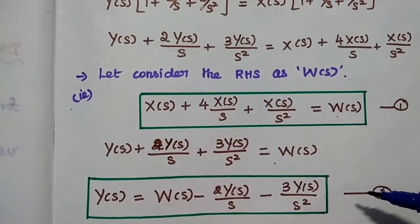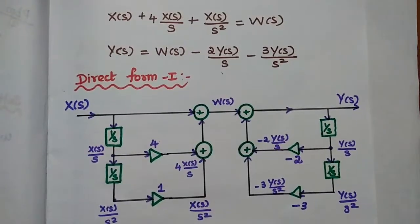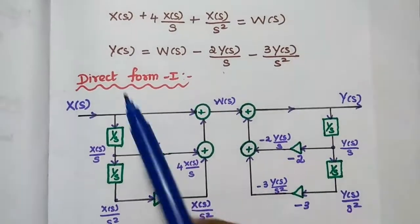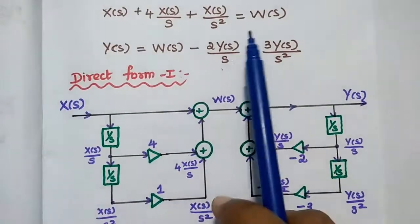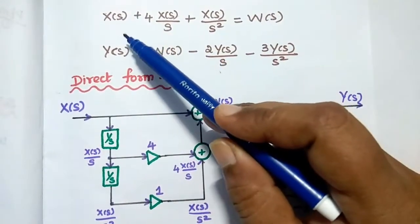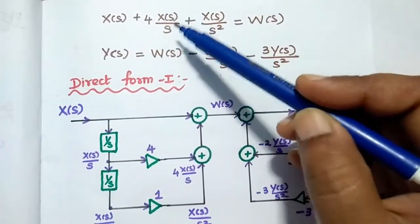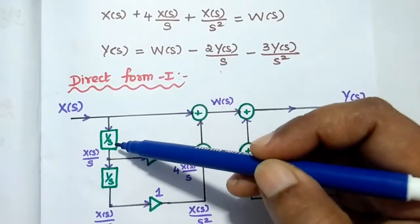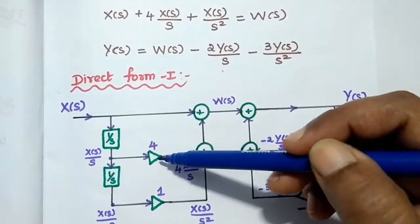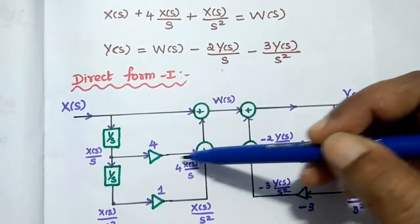After getting the first and second equations, we are going to draw the direct form 1 realization for this system. For the first equation, X of S is the input and W of S is the output. We start with X of S. On the left hand side, we have to add three terms: X of S, plus 4X of S by S, plus X of S by S squared. In order to get X of S by S, we give X of S to a 1 by S block. Then we can get X of S by S, which is multiplied with 4 — the multiplier is represented by a triangle symbol — giving 4 multiplied with X of S by S as the output at that point.